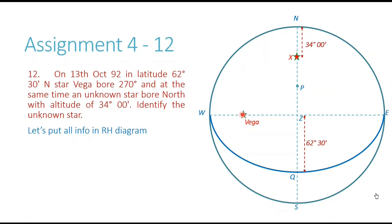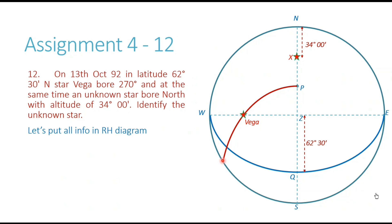Now, I have star Vega in my diagram, and I have the pole and the zenith. So I am going to draw the celestial meridian of star Vega. Its celestial meridian will originate from the pole, pass through star Vega, and extend downwards. The maroon color line you see from P going through Vega and beyond is the celestial meridian of Vega.